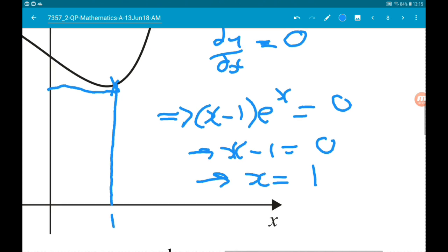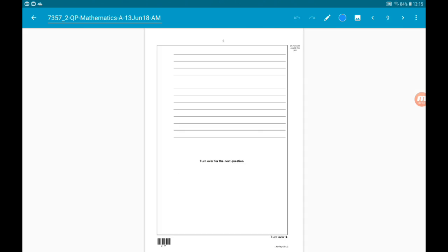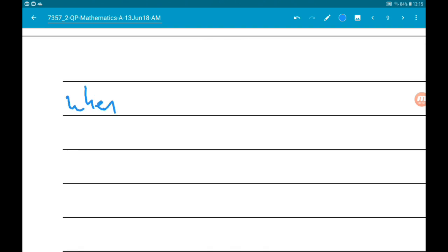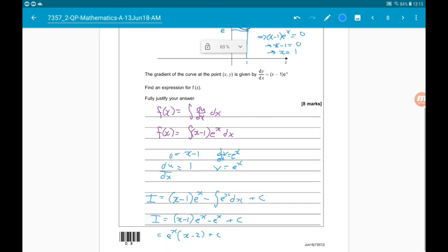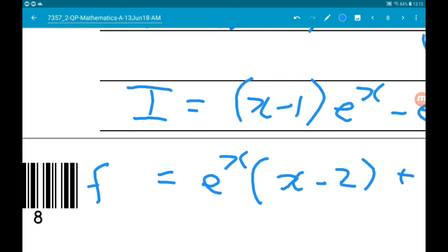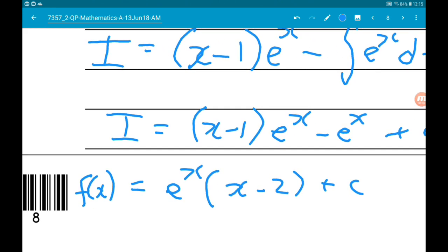So now that we know that point, we can find the value of c. So now we know when x is one, y or f of x, whichever, is equal to e. Now we know that f of x, at the moment, is this kind that we've just found.